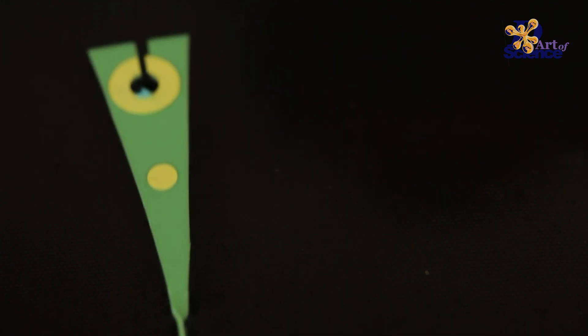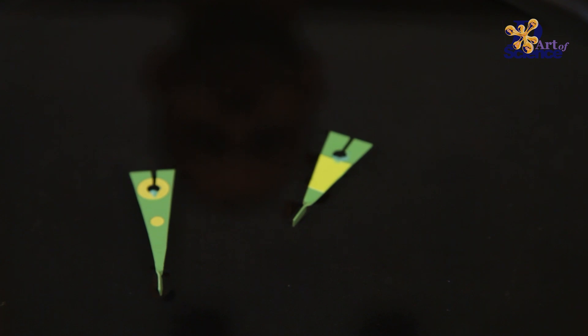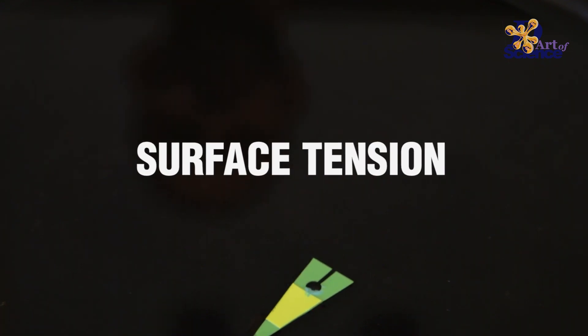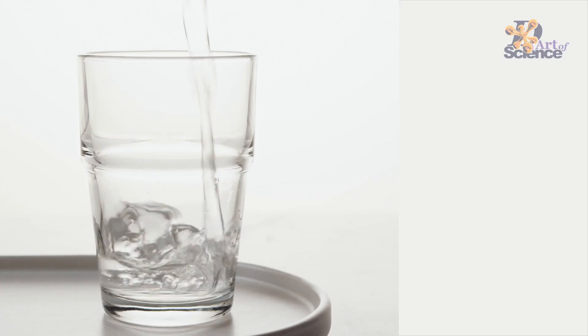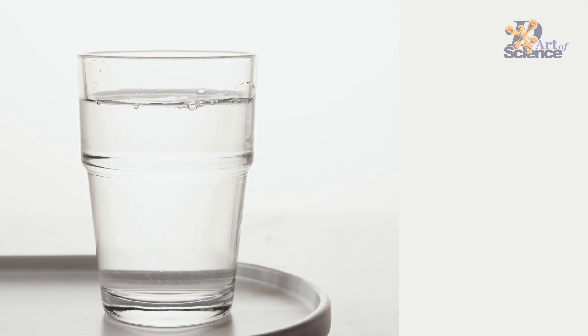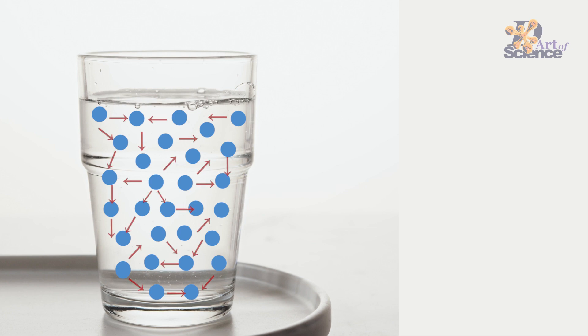Confusing, right? Well, the scientific principle at play here is known as surface tension. Let's understand what it is. Water is made up of many molecules, and all of these molecules are attracted to one another. They just want to bunch up together, and this attraction within the molecules is known as cohesion.